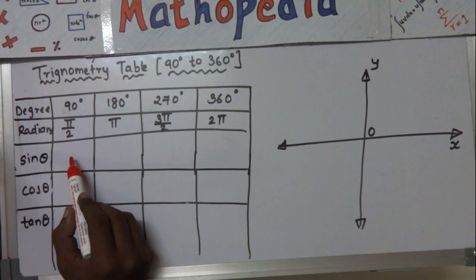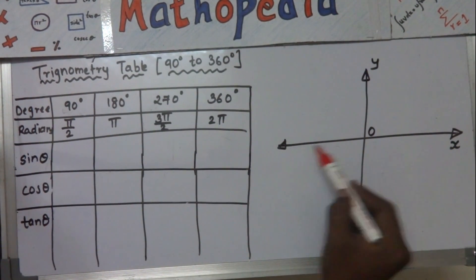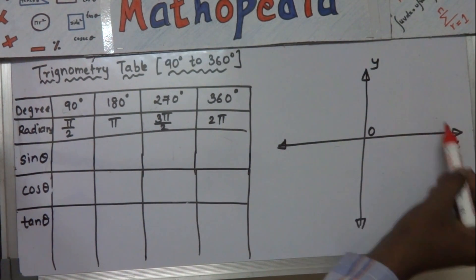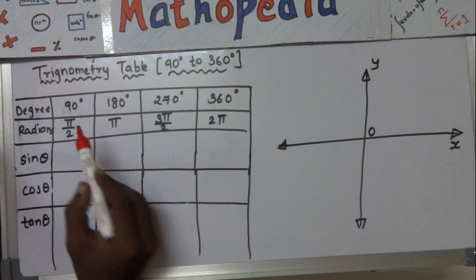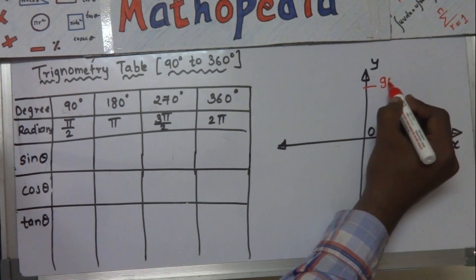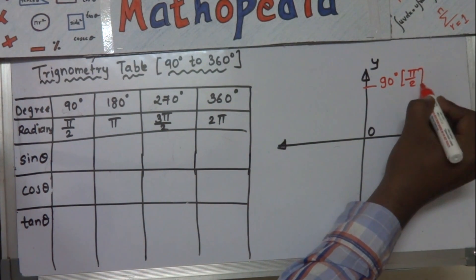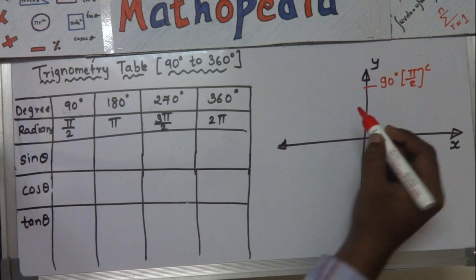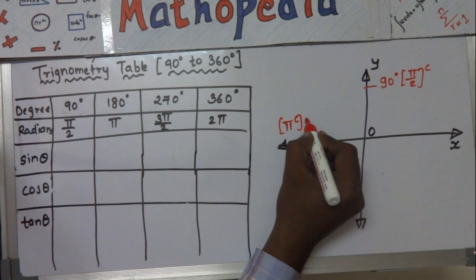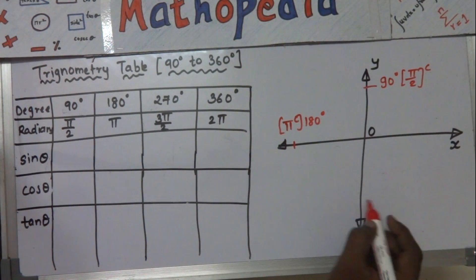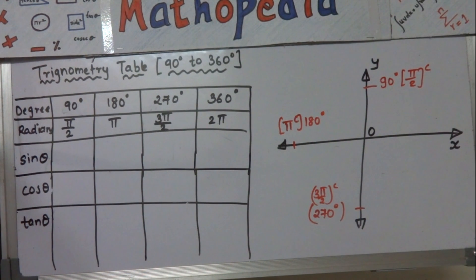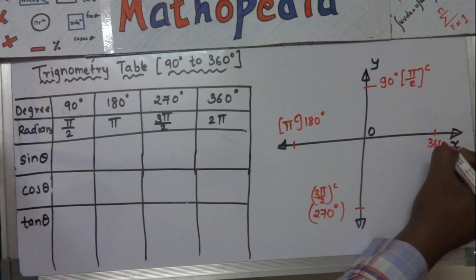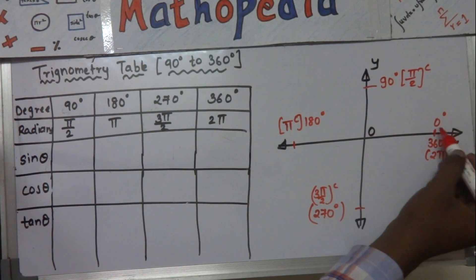Before starting the table, I have drawn a graph with an x-axis and y-axis to understand the tricks for memorizing the values. We plot the angles on this axis: 90 degrees (pi by 2) on the positive y-axis, 180 degrees (pi) on the negative x-axis, 270 degrees (3 pi by 2) on the negative y-axis, and 360 degrees (2 pi) which is also 0 degrees.